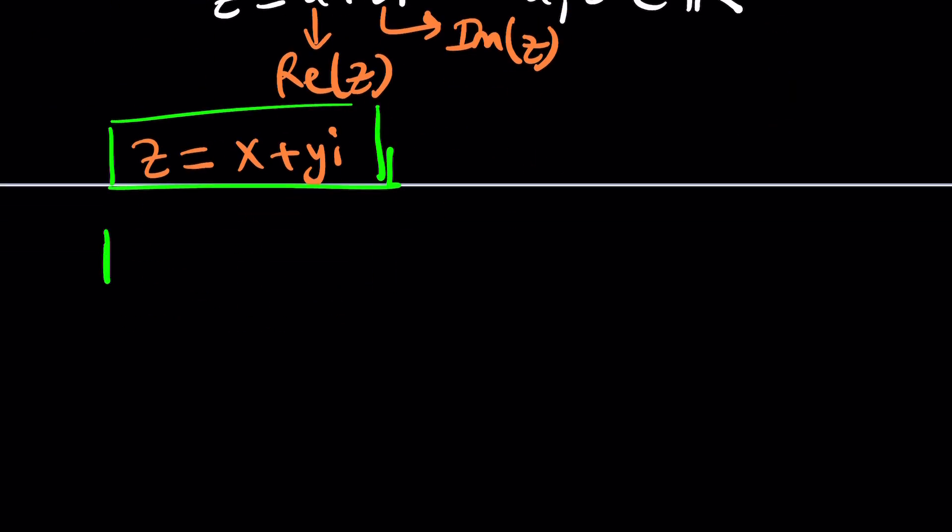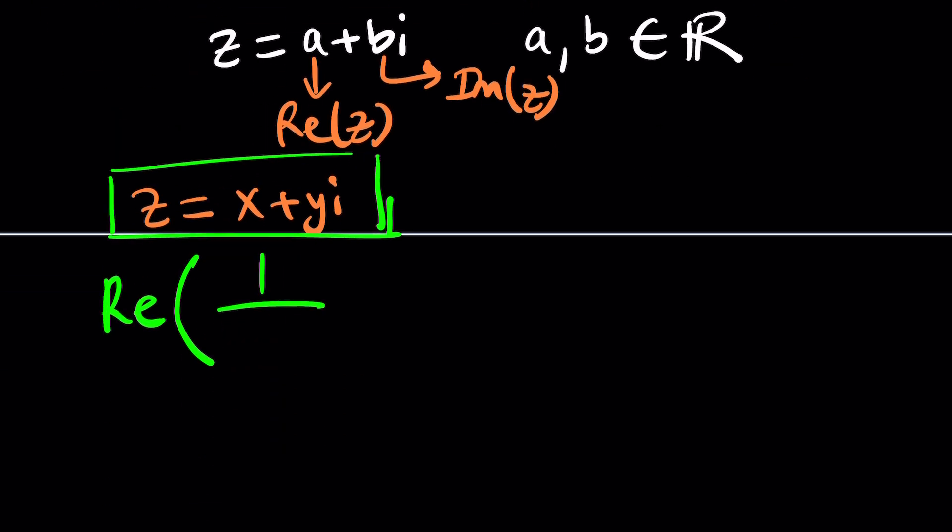Now, if you go ahead and plug it in, we are looking at the real part of 1 over 1 minus z. 1 minus, and you have to put that thing in parentheses. Be careful with that. And we want this to be one half. This is all given.